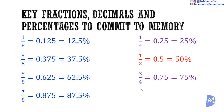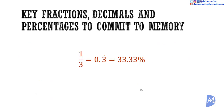Thirds are also common. A third is a recurring decimal: 0.3333... and continues indefinitely. The dot above the three signifies this. As a percentage it is 33%, or 33.3%, or 33.33% depending on how many decimal places you choose to approximate to. Two thirds is 0.6 recurring, which is 67%, or 66.7%, or 66.67% depending on how many decimal places you choose to approximate to.